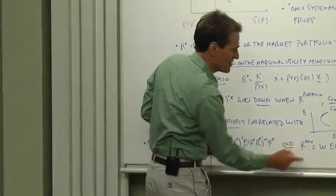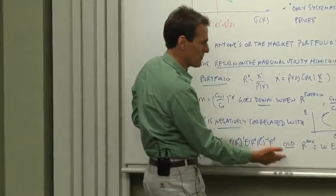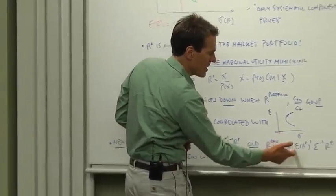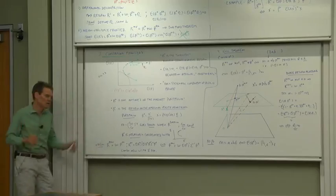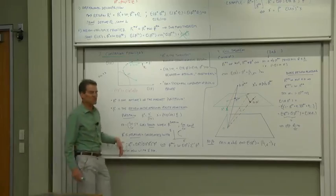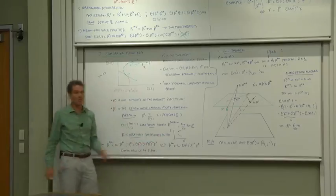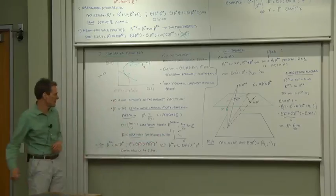Lagrangian methods, we got mean variance efficient portfolios are a constant times a mean prime, a covariance matrix times excess returns. We're oh so close. And in fact, it's just two lines of algebra to show that these two approaches give exactly the same mean variance frontier.